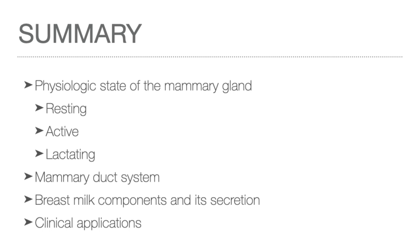The development of the female breast is complex. There is rapid anatomic development at puberty and completion of differentiation during pregnancy and lactation, followed by a slow, gradual glandular involution, which accelerates during menopause. Components of breast milk, its secretion, and comparison with cow's milk were discussed to emphasize the importance of breastfeeding over bottle feeding.